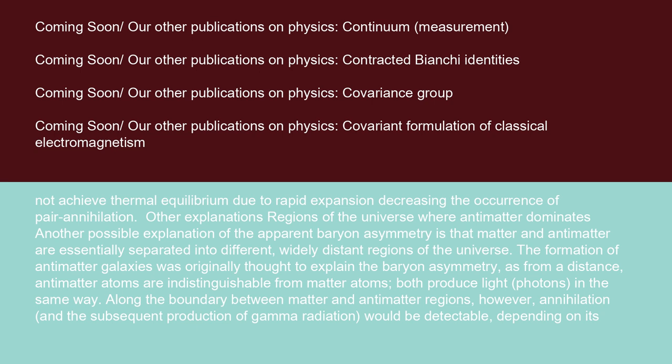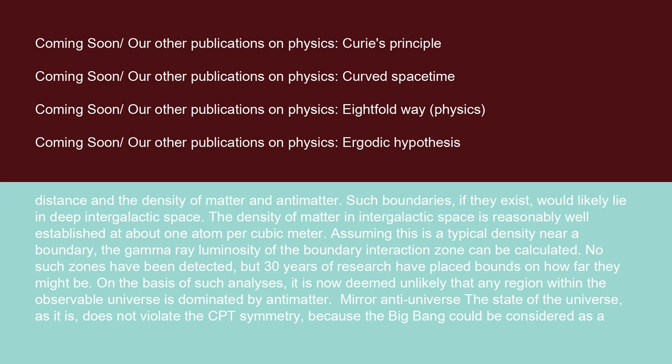Along the boundary between matter and antimatter regions, however, annihilation and the subsequent production of gamma radiation would be detectable depending on its distance and the density of matter and antimatter. Such boundaries, if they exist, would likely lie in deep intergalactic space.